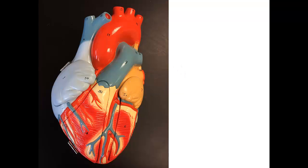The anatomy of the heart can seem overwhelming, but we can break it up into smaller pieces to make learning easier. First, we'll learn the names of the vessels leading into and away from the heart. Then we'll learn the names of the chambers — receiving chambers, the atria, and the pumping chambers, the ventricles. Then we'll learn the names of the heart valves and the direction of flow through the heart.